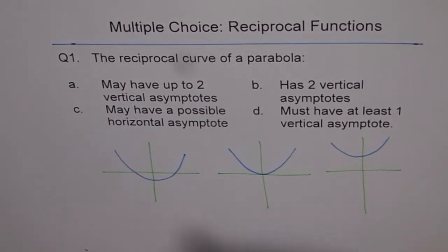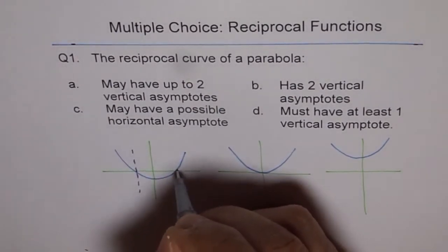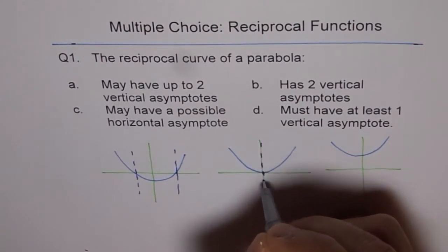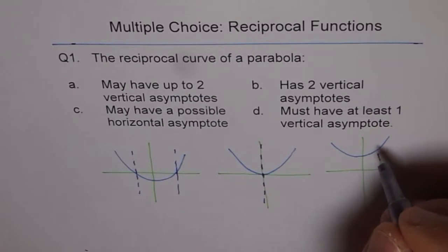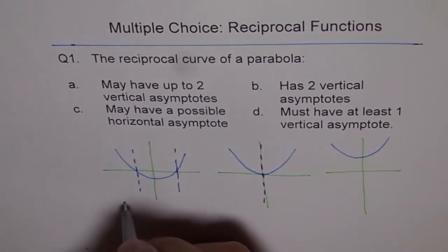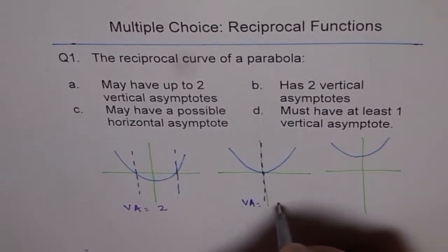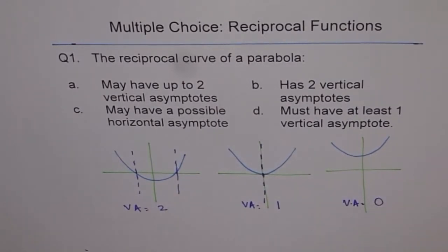The reciprocals will have, in this case, two vertical asymptotes. Do you see that? Two vertical asymptotes. In this case, one vertical asymptote. I'm not fully drawing the reciprocal, but you know about it. In this case there are no vertical asymptotes. As far as vertical asymptotes go, we have two here, one here, and none here—zero.